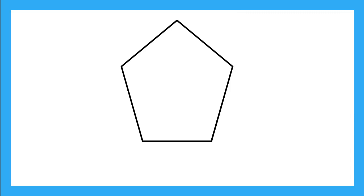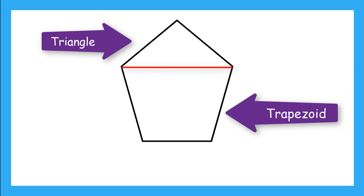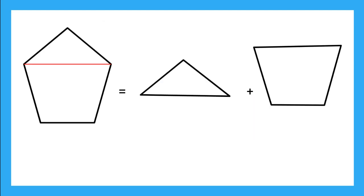When you look at this pentagon, do you see other shapes inside of it? We can draw a line right here and turn this pentagon into a triangle and a trapezoid. Now the area of this pentagon is equal to the area of the triangle plus the area of the trapezoid.